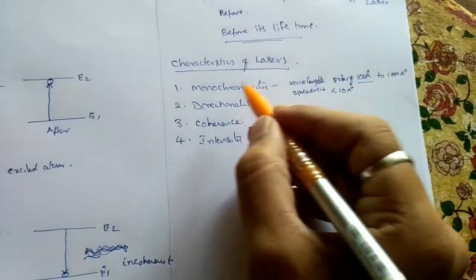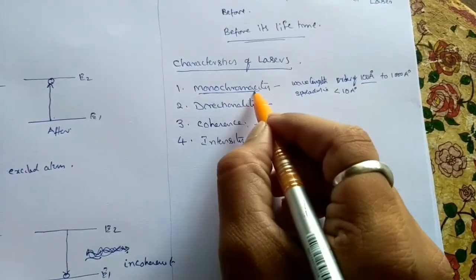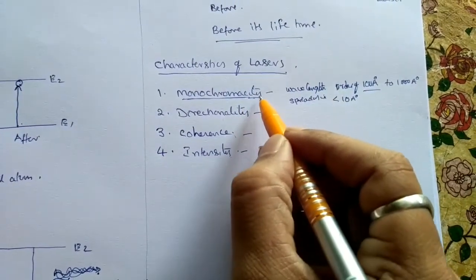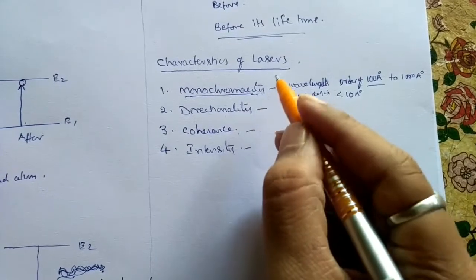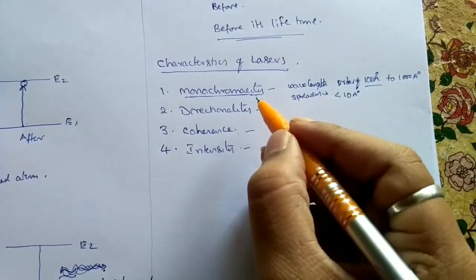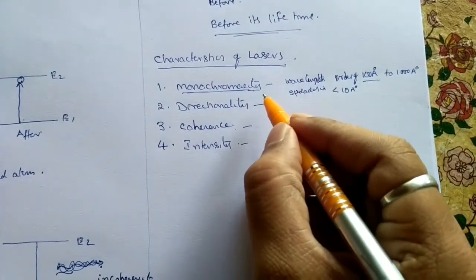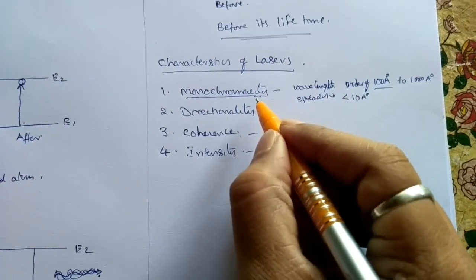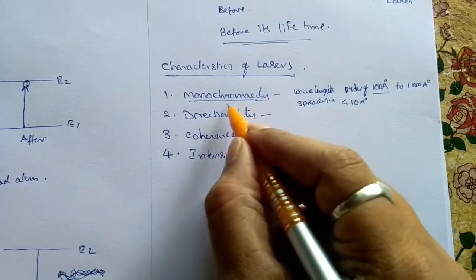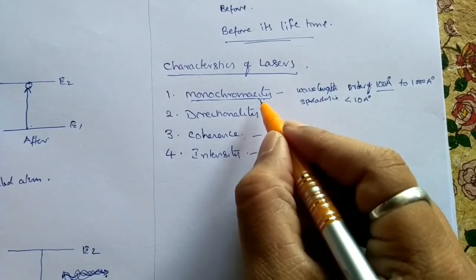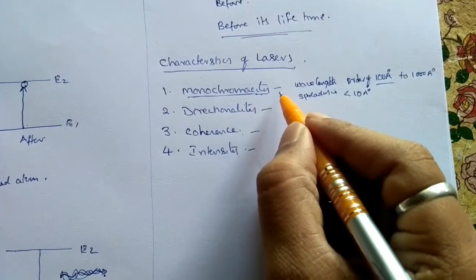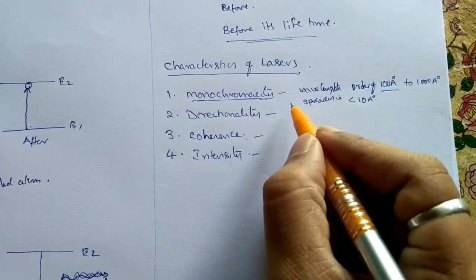Monochromaticity means it is a single wavelength or single colored light. If we assume a light beam in the form of a group of waves, all the waves in that particular group vibrate with same frequency, same wavelength, same amplitude, etc. That type of light is called monochromaticity.